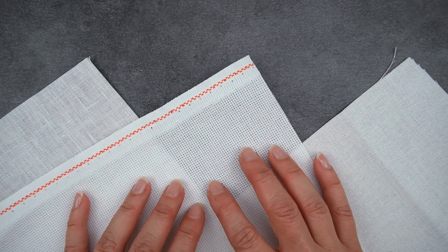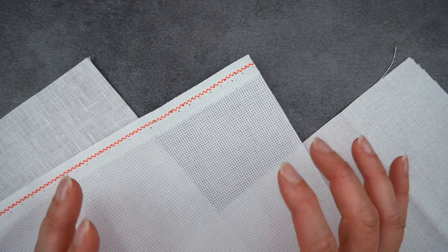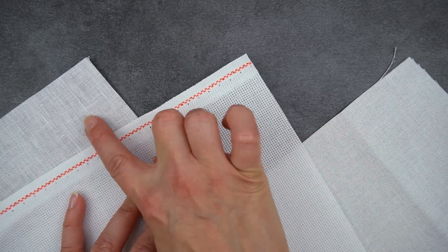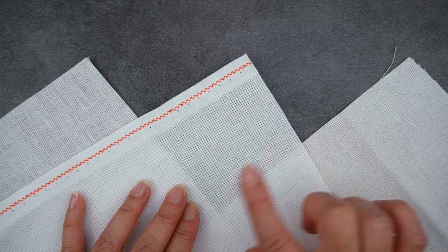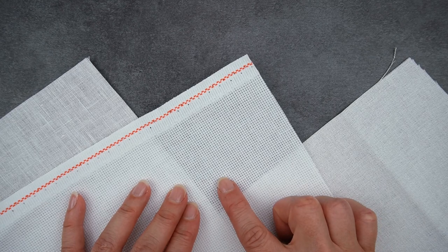So let's talk about the differences between Aida and even weave or linen. Now I've already mentioned that the main difference is how you work the stitches because when you're cross stitching on linen or even weave you make each cross stitch over two threads of the fabric instead of over one block when you're working on Aida.